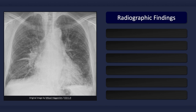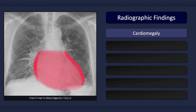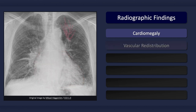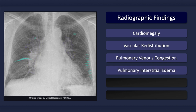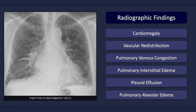On an erect posterior-anterior chest x-ray, suggestive findings include: cardiomegaly, which does not necessarily need to be present; vascular redistribution, that is, the cephalization of blood flow; pulmonary venous congestion; pulmonary interstitial edema; pleural effusions; and in more severe disease, alveolar edema, which is not clearly evident on this radiograph.